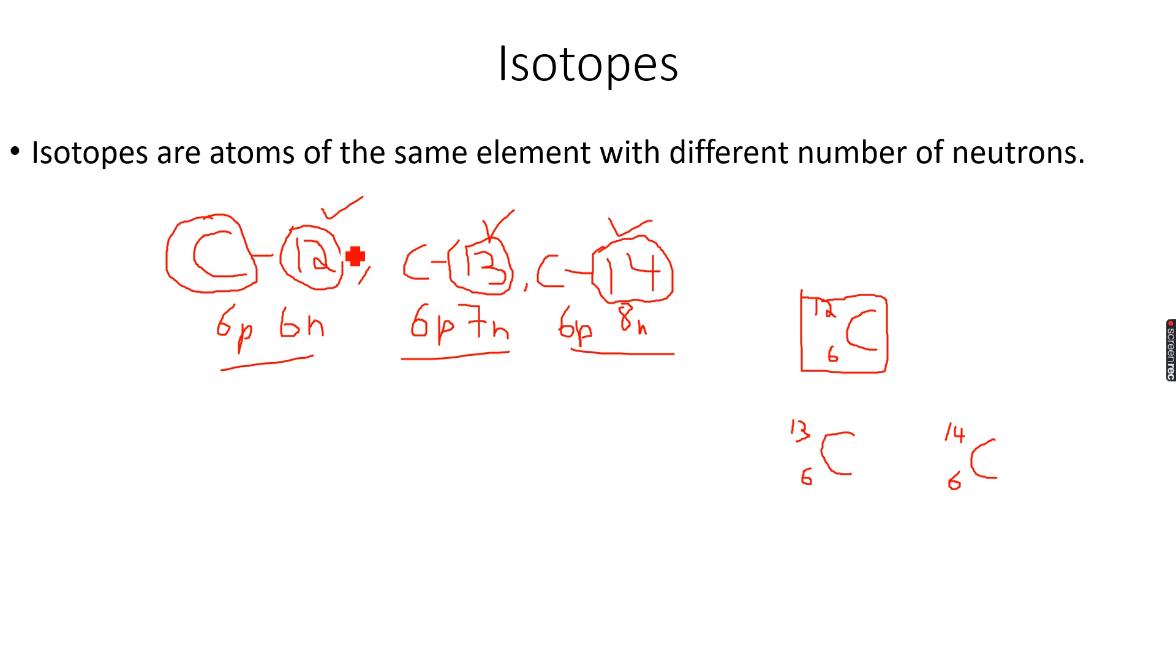Carbon 12 is the most stable isotope of carbon and that's why it is the most abundant in nature. Carbon 14 is the least stable isotope of carbon and it is least abundant in nature.